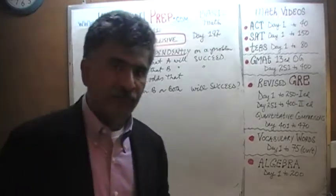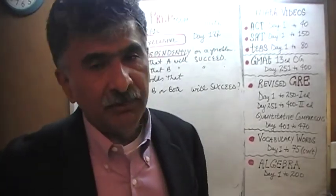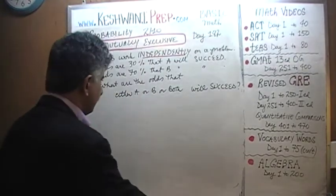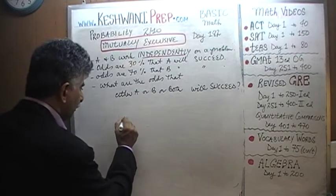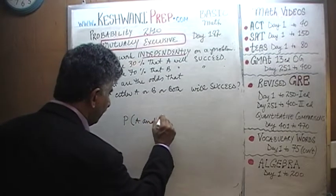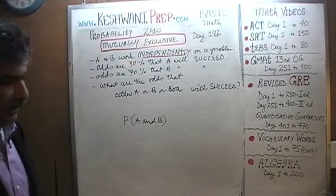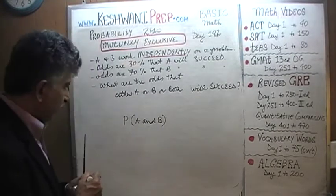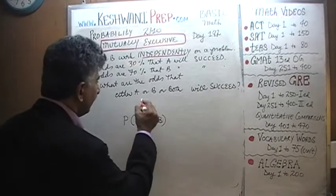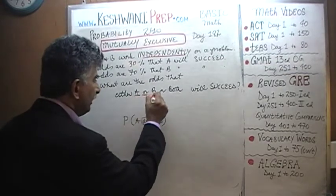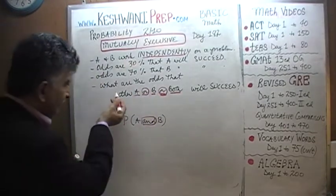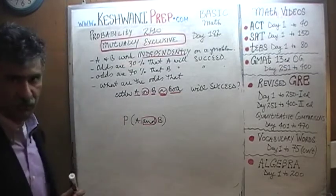The problem on the blackboard is exactly the same problem we did yesterday. The only difference is that yesterday the question was: what are the odds that both A and B will succeed? Today we do not have AND — we have either A or B or both. It is OR. That is the essential difference between the two concepts.